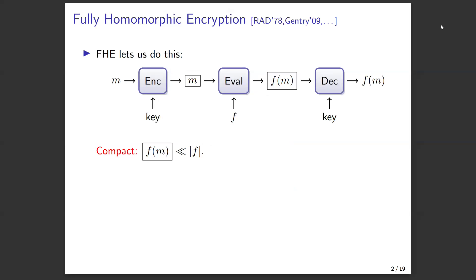To set the stage: fully homomorphic encryption was an idea proposed by Rivest, Edelman, and Dertouzos, now 35 years ago. The idea is: take some data or message m, encrypt it under a key — public or secret — and that puts it in a box, opaque and unreadable. But then, what if we could evaluate arbitrary functions on that underlying data? You put a ciphertext and a function f through an evaluation procedure, and out comes a ciphertext that encrypts f(m). If you decrypt it, you get f(m).